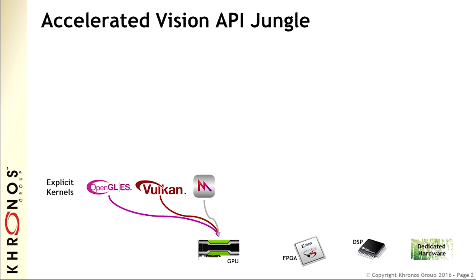Lots of the acceleration APIs out there actually started driving GPUs and started life as 3D graphics APIs, but they've become more relevant to the vision processing community as they've become more programmable. Shaders let you write programs that can process images and vision streams and accelerate those on the GPU hardware. We have the traditional APIs like OpenGL and OpenGL ES, and new generation APIs — Vulkan, which is from Khronos, and Metal from Apple.